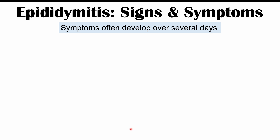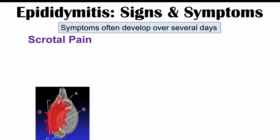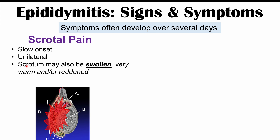The signs and symptoms of epididymitis often develop over the course of several days. By far the most important symptom is scrotal pain. Because the epididymis is on the posterior testis, inflammation can cause scrotal pain with a slow onset. It's going to be unilateral — only one side of the scrotum is affected — and the scrotum is most likely going to be swollen, very warm, and/or reddened in appearance. If you touch the posterior scrotum it's going to be very tender to palpation.